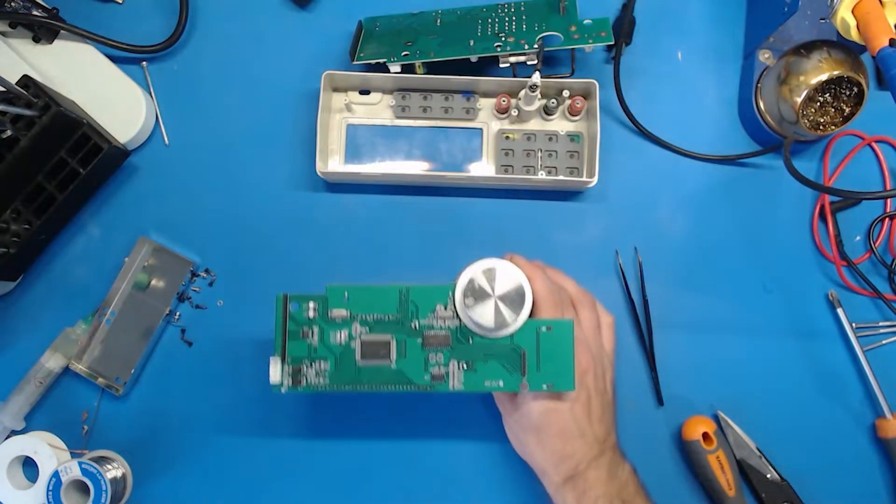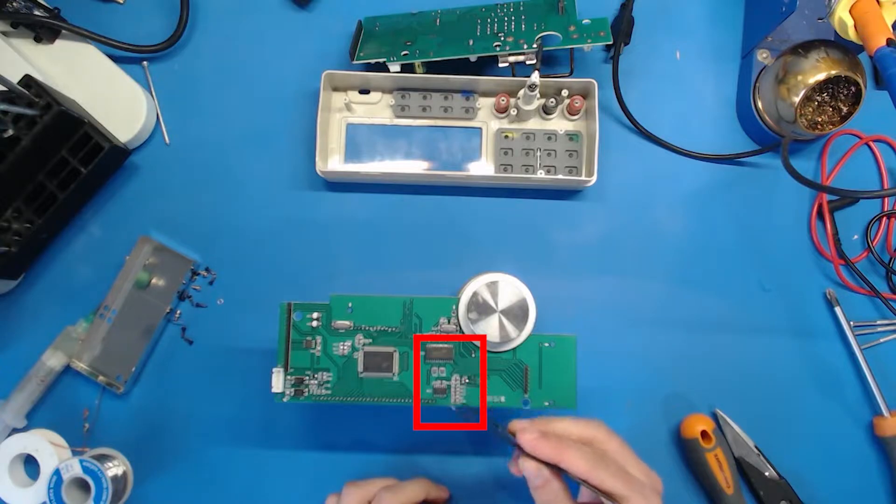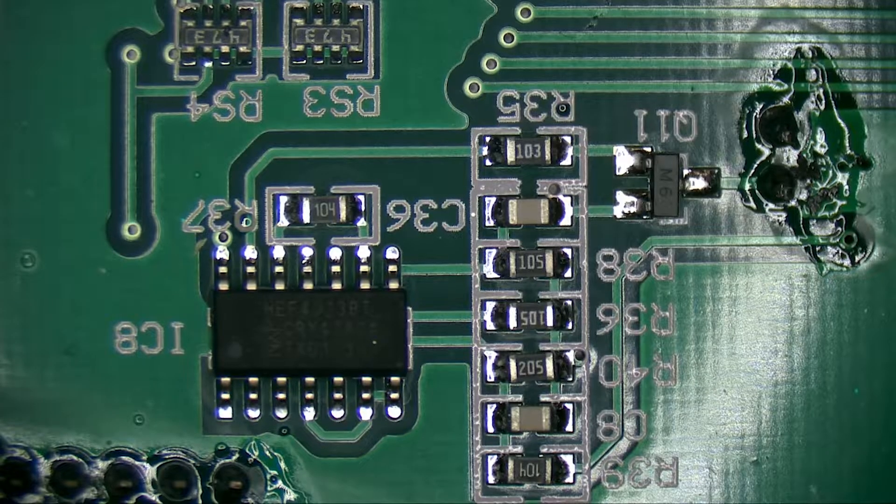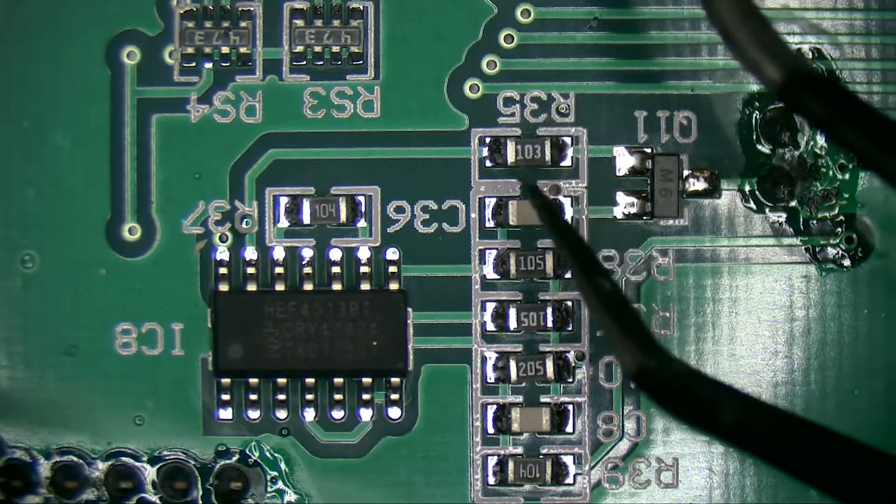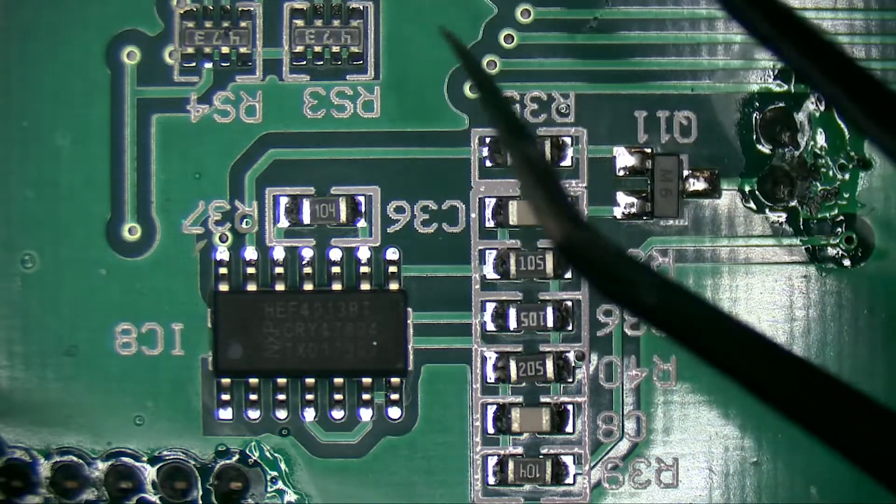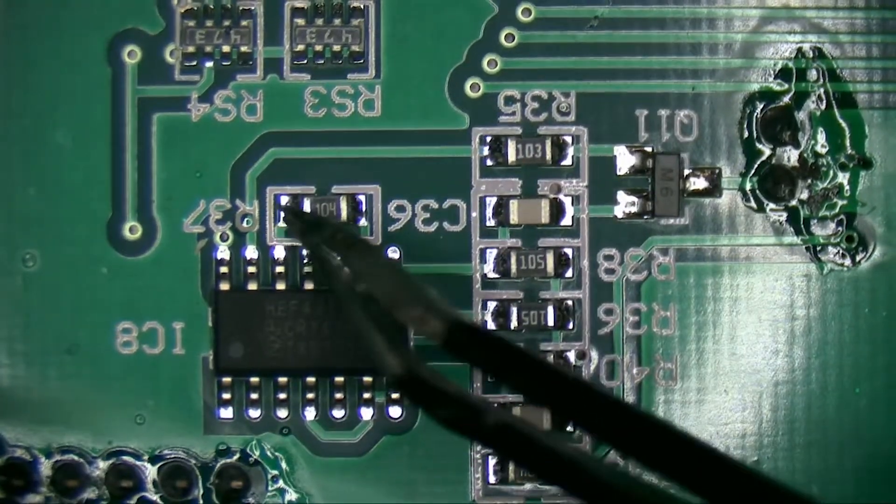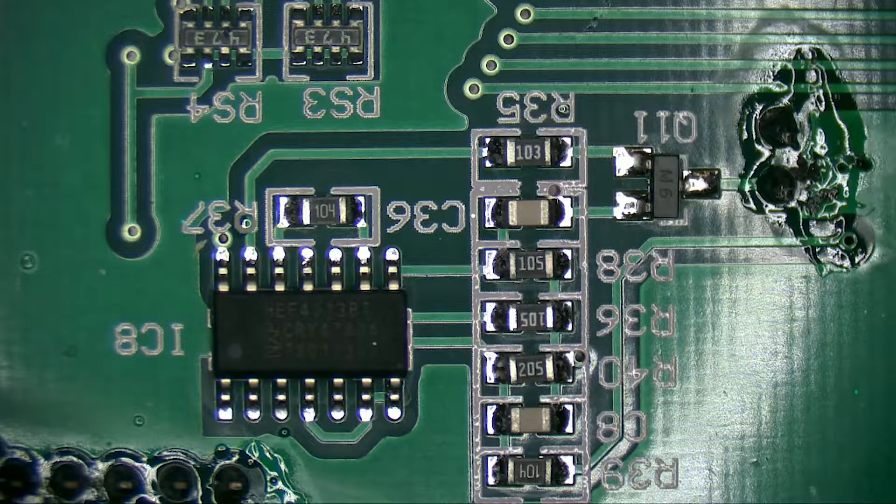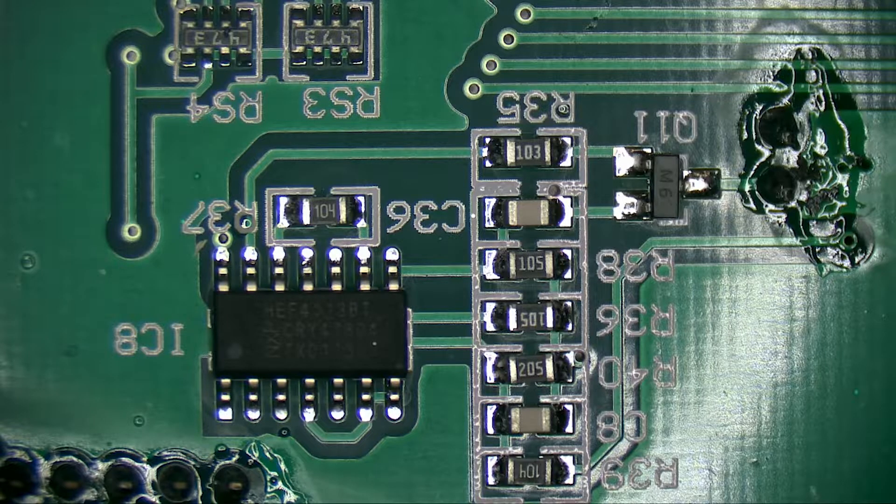So for the backlight mod the area of focus is here. Basically what we want to do is rotate this resistor 90 degrees and then we're going to run a wire from that resistor over to the resistor here. So I'm going to see if we can do this without hot air because we don't want to damage the display behind this board.